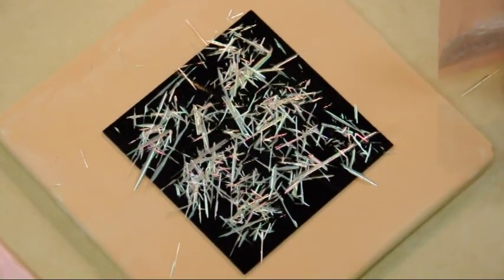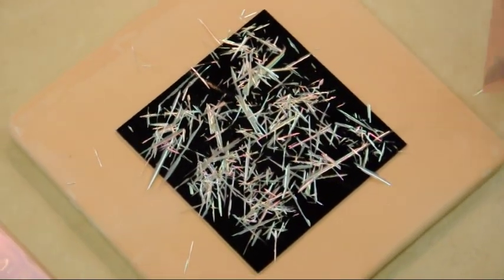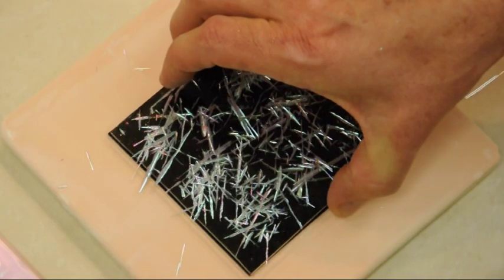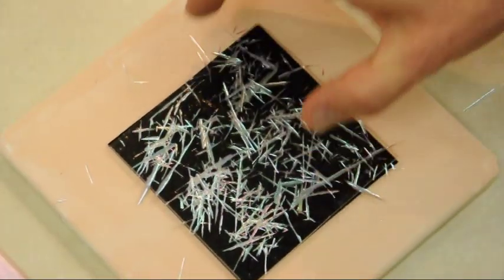Once you have applied all the dichroic to that piece that you want on it, we're just going to take a clear cap and then fire it in the kiln. And here's an example of what that would look like.